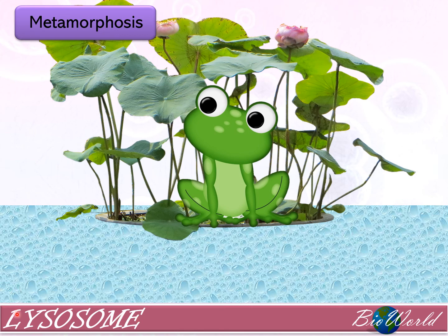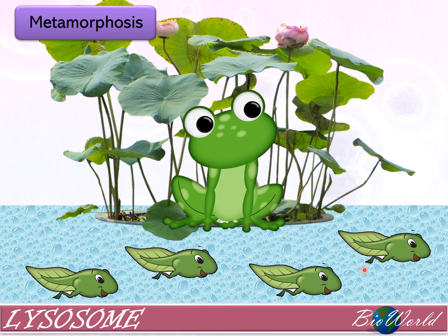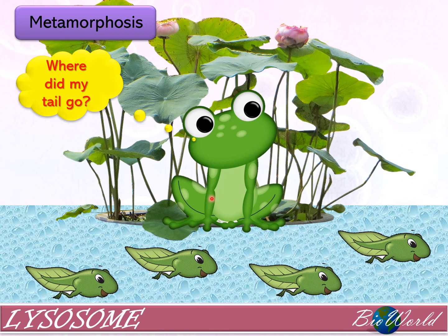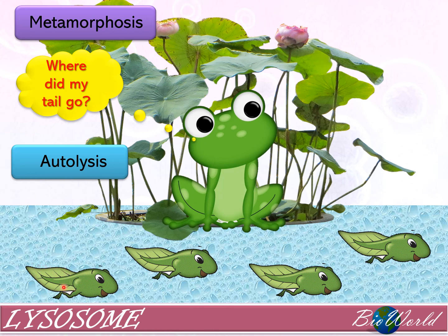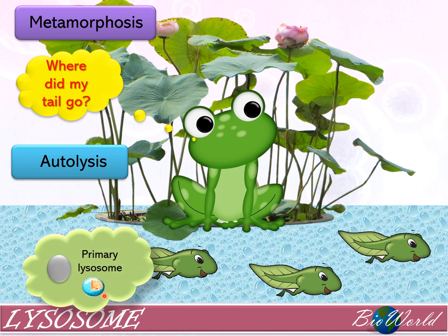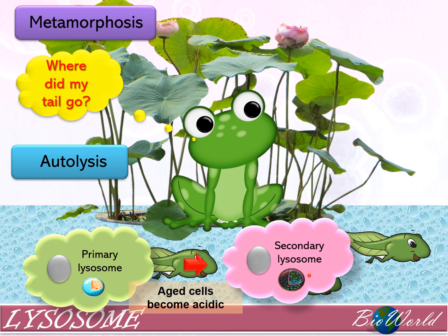Let's look at the final role of the lysosome in metamorphosis. Metamorphosis occurs in the development of a frog. The young tadpole has a tail, but due to metamorphosis the adult frog does not have a tail. During metamorphosis, lysosomes are involved in autolysis — a process where cells in the tail of the frog automatically lyse. Originally, the cells in the tail contain primary lysosomes, but for metamorphosis to occur the cells start to become acidic, causing the primary lysosome to transform into a secondary lysosome.